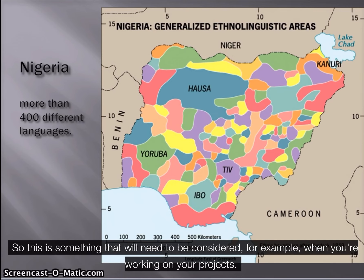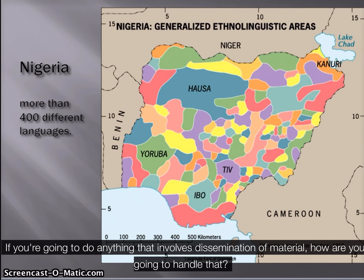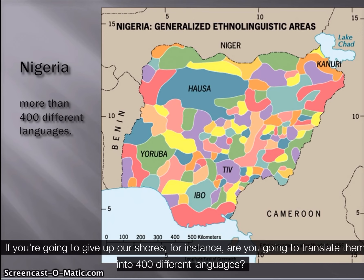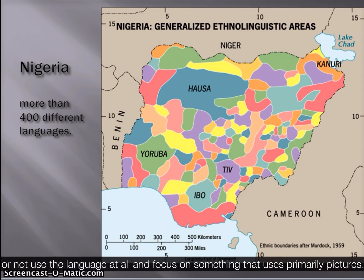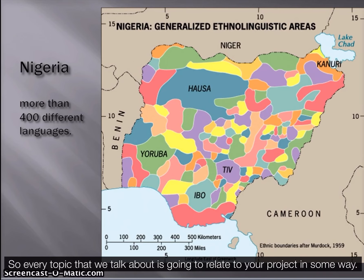This is something that will need to be considered when you're working on your projects. If you're going to do anything that involves dissemination of material, how are you going to handle that? If you're going to give out brochures, are you going to translate them into 400 different languages, or focus on lingua francas for the region, official languages, or not use a language at all and focus on something that uses primarily pictures? So every topic we talk about is going to relate to your project in some way.